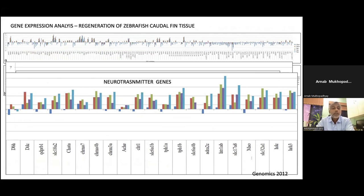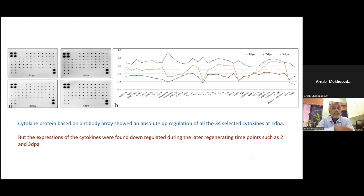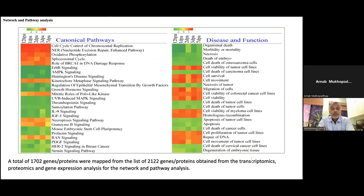You can see how these gene families are associated with regeneration. Interleukins show a downregulation pattern throughout, with 12 hours and one day closely linked, and two days and three days associated with seven days. SLC genes and neurotransmitter genes are completely upregulating. We confirmed those interleukins and cytokine proteins through antibody arrays, and found cytokine proteins were downregulated as observed in the gene data at day two and day three of regeneration. From this rich transcriptomic and proteomic data, we constructed several pathways associated with zebrafish caudal fin regeneration, including different canonical pathways and disease and function associations.